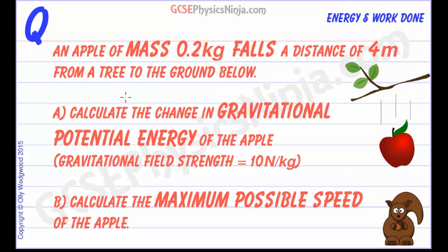When an object falls, its energy changes from gravitational potential energy into kinetic energy, movement energy. We can use the equations for both of these quantities to work out the maximum possible speed of a falling body.